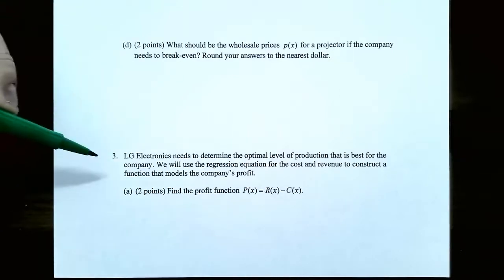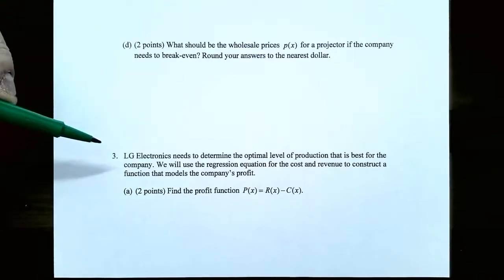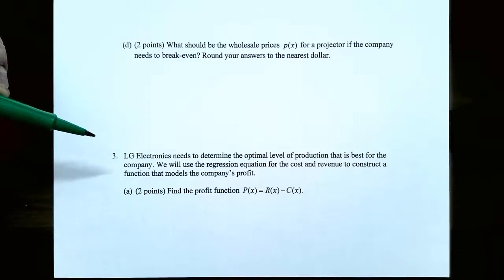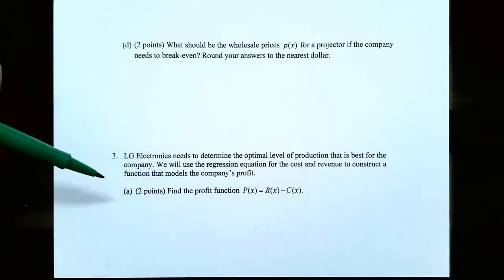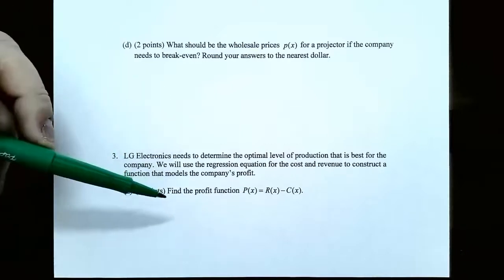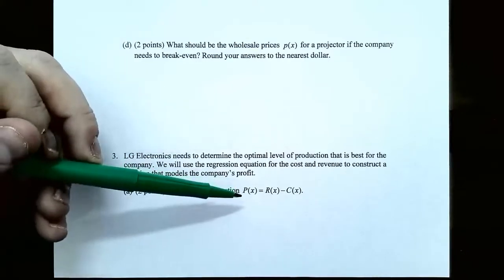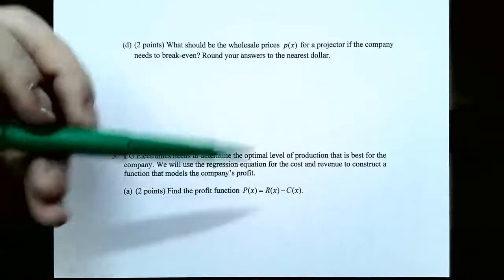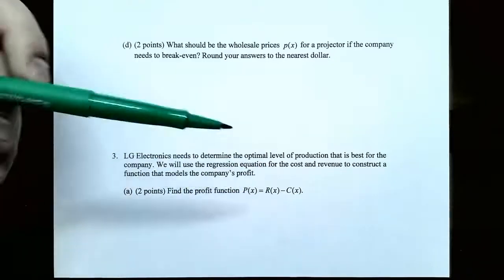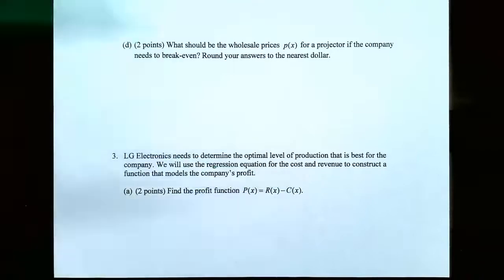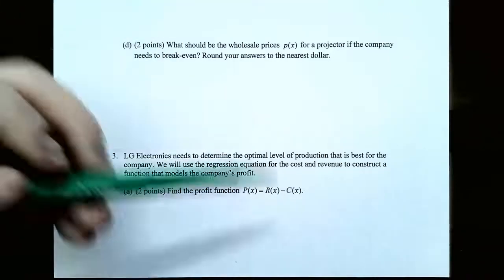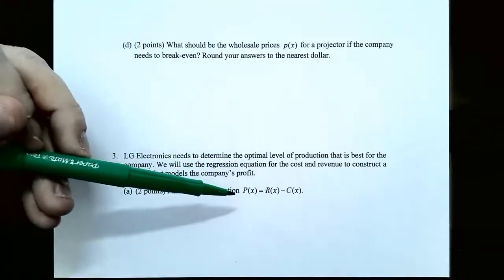Number three: LG Electronics needs to determine the optimal level of production that is best for the company. We will use the regression equations for cost and revenue to construct a function that models the company's profit. Part A: find the profit function capital P of x, which we defined earlier in the course as profit equals revenue minus cost. Subtract the cost function from the revenue function to find the profit function.